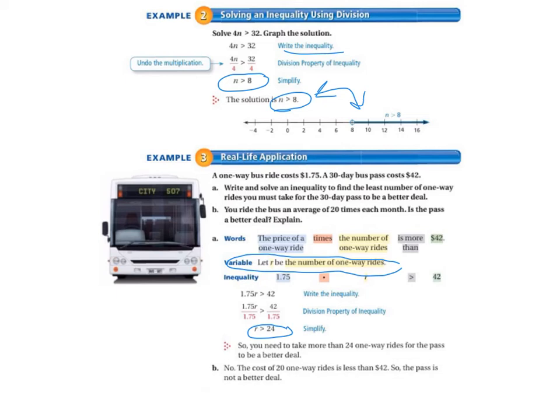So we need to take more than 24 one-way rides for the pass to be a better deal. So the answer to B then is no. The cost of 20 one-way rides is less than $42, so the pass is not a better deal for us.